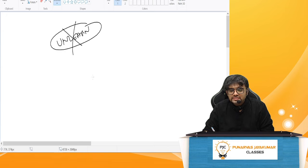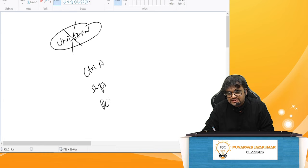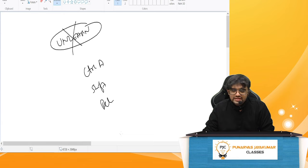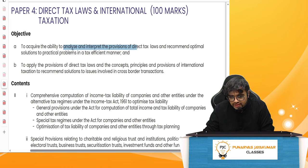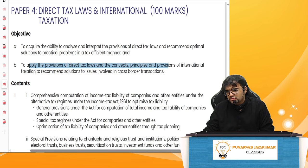The entire process is unlearning. Think of it as Ctrl-A, Shift-Delete — delete everything we have studied before and then learn afresh. As stated in the syllabus: analyze and interpret the provisions of direct tax laws, and apply the provisions including concepts and principles of international taxation. It's a 100-mark paper with generally a 70-30 ratio — 30 marks for international taxation and 70 marks for direct tax provisions.